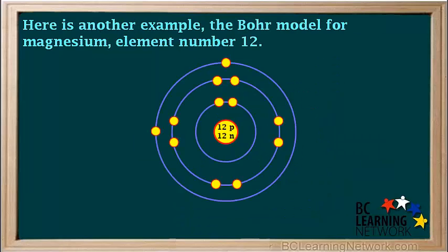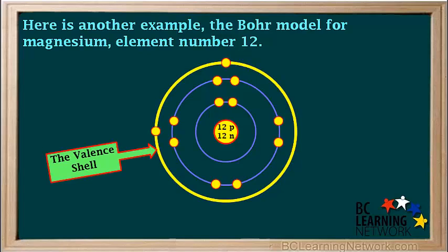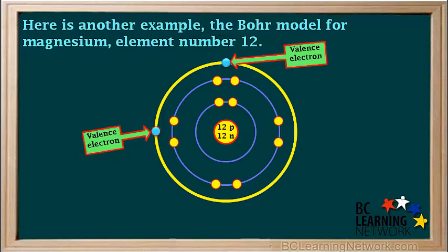Here's another example: the Bohr model for magnesium, element number 12. Its outermost occupied shell, or valence shell, is shell number three, as shown by the yellow circle. And the two valence electrons in a magnesium atom are shown by the two blue circles in the valence shell.